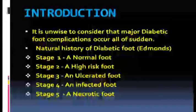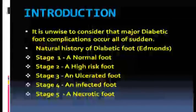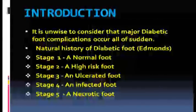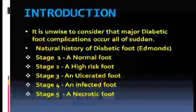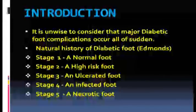It is unwise to consider that major diabetic foot complications can occur all of a sudden. There is a gradual process through which the biomechanics and how things develop has been explained. The stages of diabetic foot are: stage one is normal foot, second stage is high-risk foot, third stage is ulcerated foot, fourth is infected, and fifth is necrotic. The importance of understanding this is that at every stage, if proper intervention is done, we can slow down progress to the next stage and save the foot of the patient.